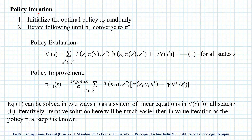We repeat these two steps until the policy converges to π*. Policy iteration is also a model-based reinforcement learning algorithm because the estimate of the state value function is obtained using the transition probability function and the reward function, which are the two main elements of the Markov decision process model of the environment.